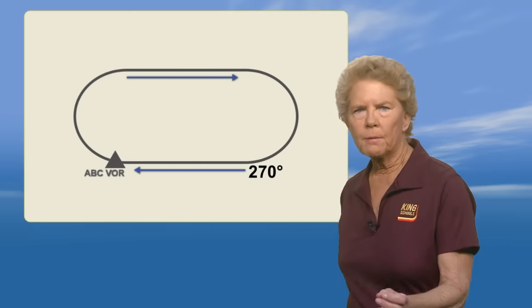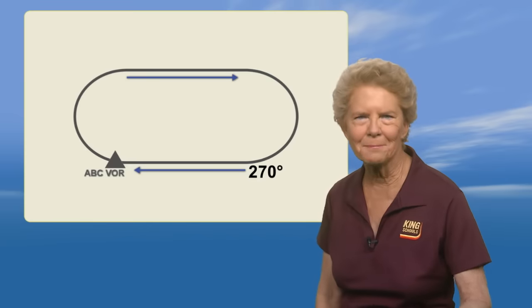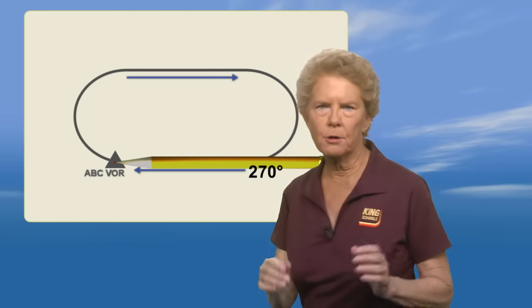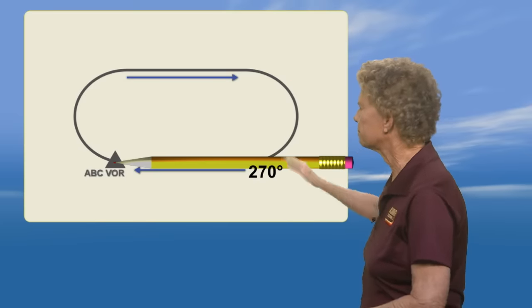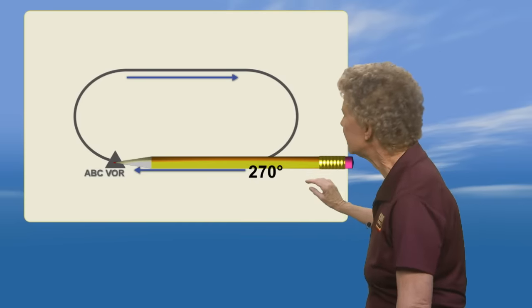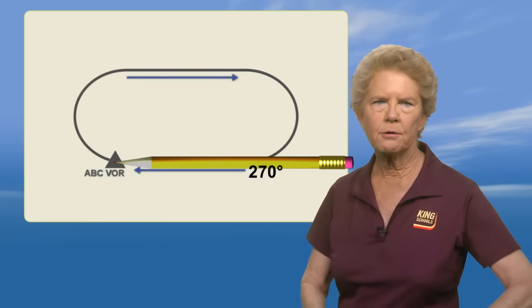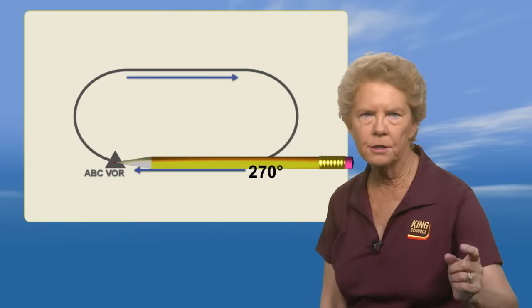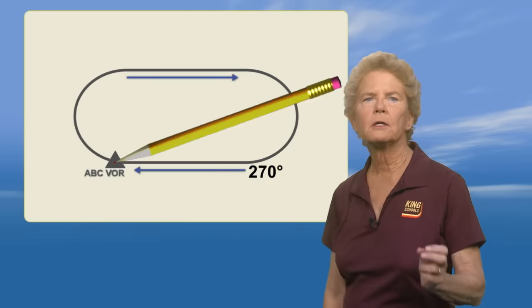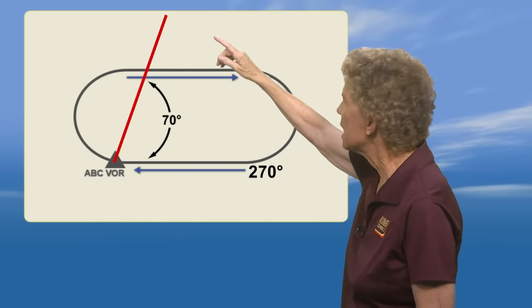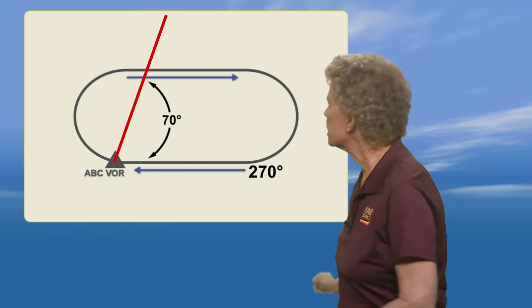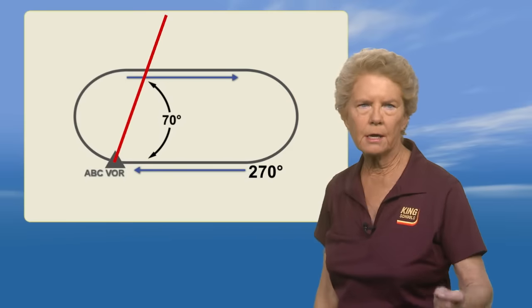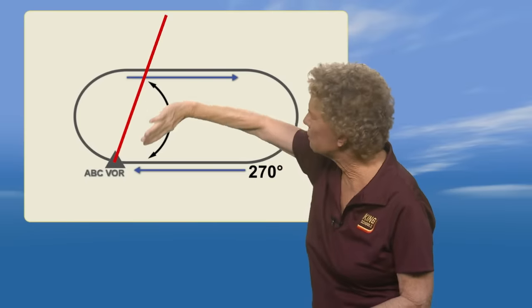Now you'll divide the holding pattern into the three entry sectors by grabbing a pencil. Take your pencil and put it down on the radial that forms that inbound leg. Put the point of your pencil on the fix and pretend like it's hinged there and the pencil can swing. You're going to swing the tail of your pencil into the holding pattern airspace. The holding pattern is right of the line, so we're going to swing the tail of the pencil to the right. You will move the tail 70 degrees into the holding pattern airspace and draw a line there. Our inbound leg course is 270 degrees, so moving the tail of the pencil 70 degrees into the holding pattern gives us a line with a course that is 70 degrees to the left of our inbound leg.